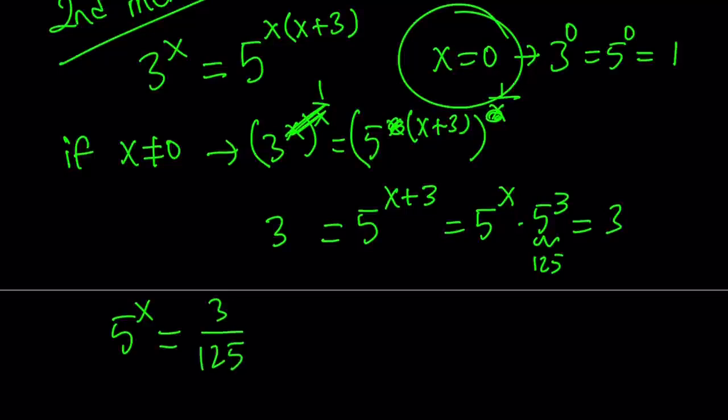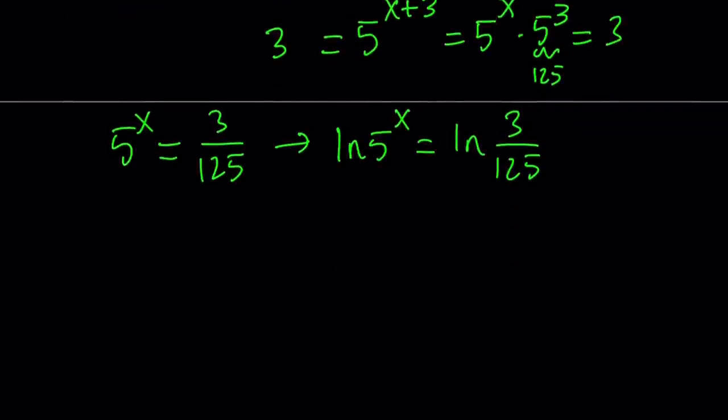And this gives us 5 to the power x equals 3 over 125. Fairly easy, right? All we have to do is take logs. It could be log, like base 10, or just a natural log, ln. It doesn't matter. But I'm going to use ln, and I want to be consistent, so I'm going to be using ln for both methods. So, let's go ahead and ln both sides.